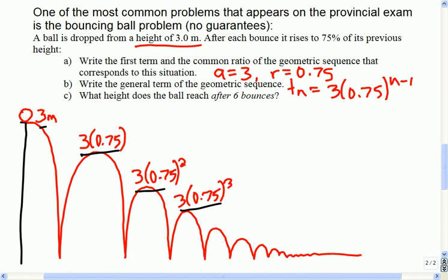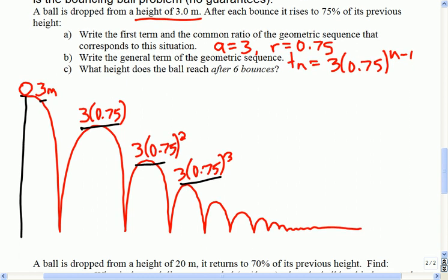What height does the ball reach after 6 bounces? With a picture, I never try to memorize a formula for these applications — I just look at my picture and remember the pattern. So for example, in this one, after 6 bounces: here's bounce number 1, here's height number 1; bounce number 2, height number 2; bounce number 3, height number 3. After the 6th bounce, the answer is 3 times 0.75 to the 6th. Real nice and simple — I can watch the pattern come out of the picture.